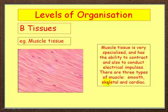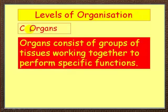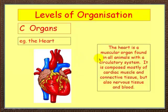The next step up from tissue is the organ. Organs consist of groups of tissues working together to perform specific functions. An example of an organ is the heart. The heart is a muscular organ found in all animals with a circulatory system. It's composed mostly of cardiac muscle and connective tissue, but it also contains nervous tissue and blood.